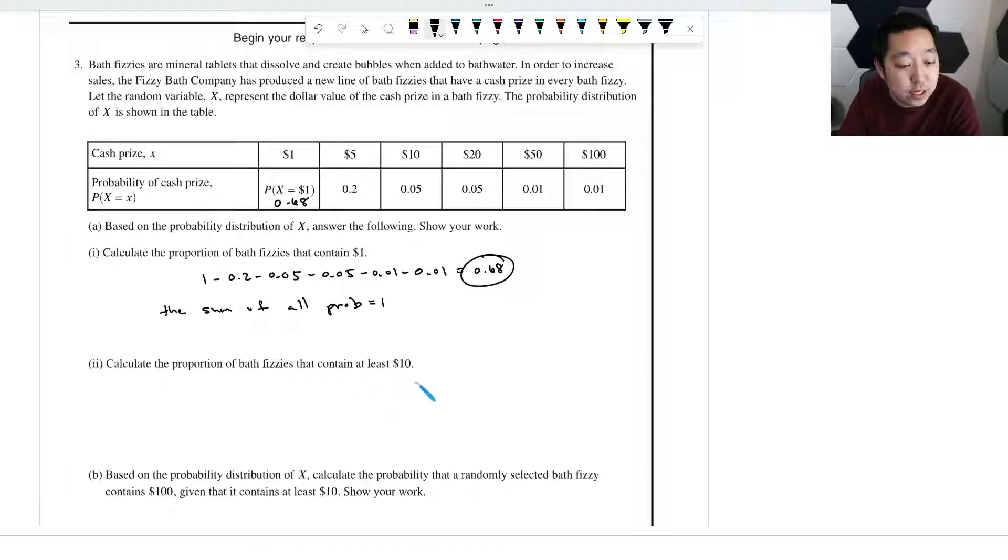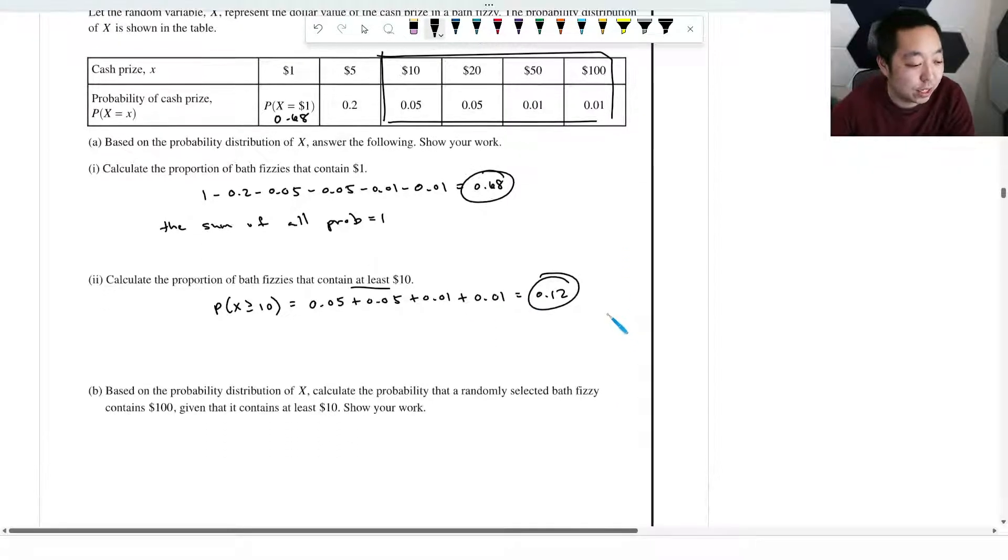Calculate the proportion of bath fizzies that contain at least $10. At least $10 means you include $10, it's $10 or more. So that's going to be the probability that x is greater than or equal to 10. So then you would say 0.05 plus 0.05 plus 0.01 plus 0.01. Let me check my calculator. That's 0.12. We'll play it on the edge and not actually use my calculator, but you really should.